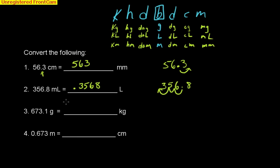Next one, we have 673.1 grams, how many kilograms? I'll write it over here again, point one, and I have to go from grams, which is right here, to kilograms. I'm going to move that decimal place one, two, three to the left.